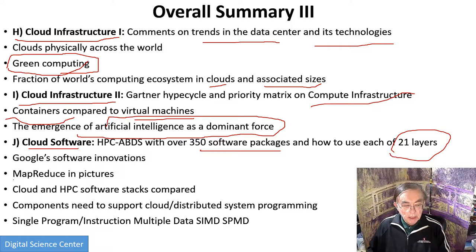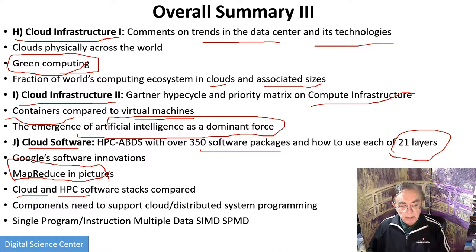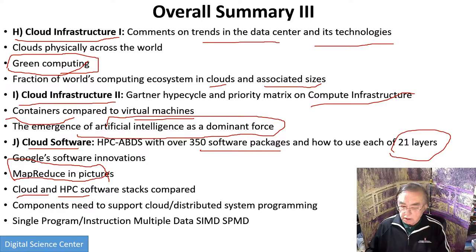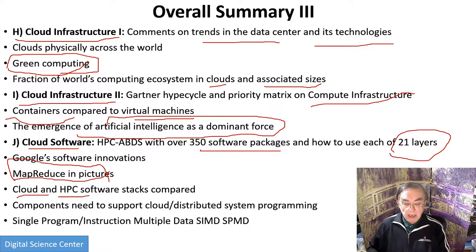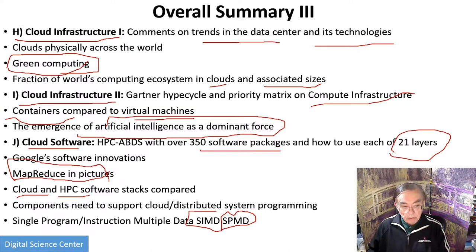We look at MapReduce with an overview and a pretty picture from Judy Chu, and we compare the cloud and high performance computing software stacks. Then we look at how you support clouds and distributed systems, discussing something important for parallel computing: so-called single instruction multiple data, or SIMD, where all computers run the same thing but have different data. More importantly, the cloud architecture is single program multiple data, or SPMD — where one job, like Hadoop, will typically run the same program on each mapper but each mapper has different data. These are simple classifications of the overall structure of parallel programs, and clouds are always running everything in parallel.